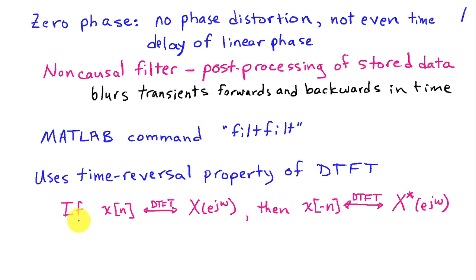And that states that if a signal x[n] has discrete time Fourier transform X(e^jω), then a time reversed version of x[n], in other words x[-n], has discrete time Fourier transform X*(e^jω).